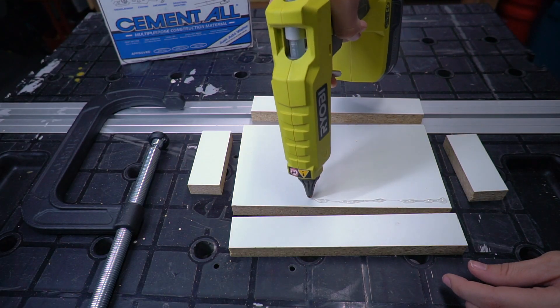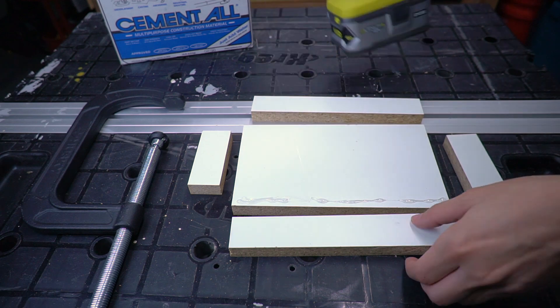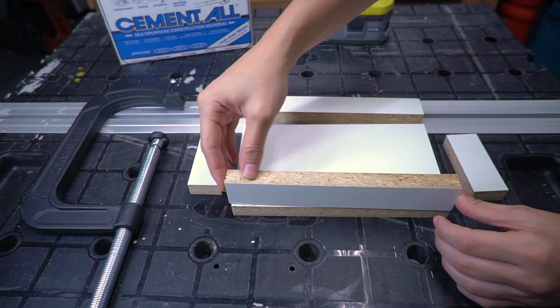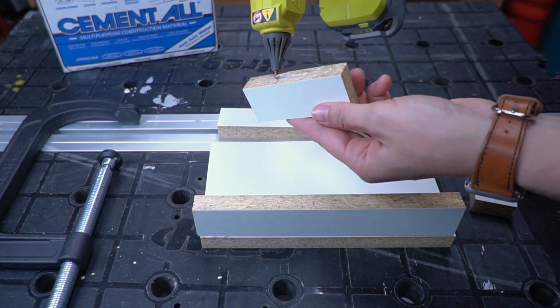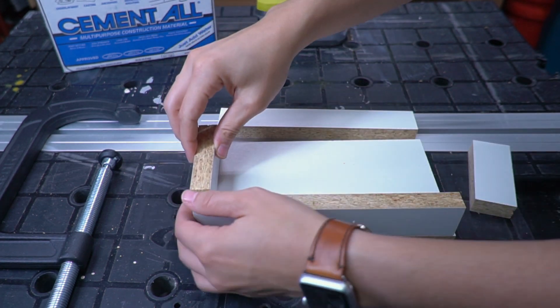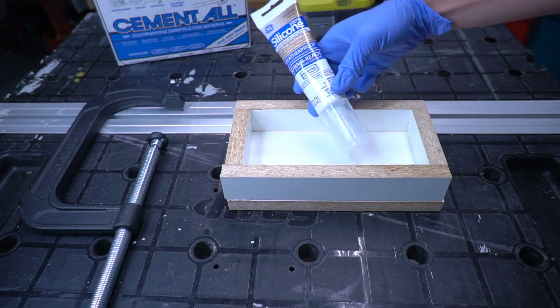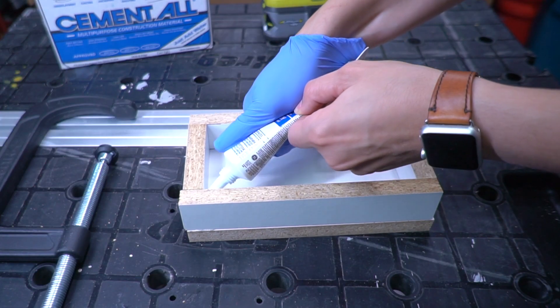Hot glue the sides to the base. For extra protection from leakage, you could seal the edges with silicone.